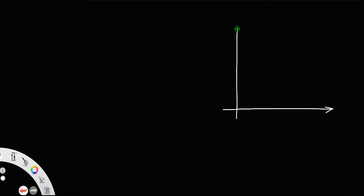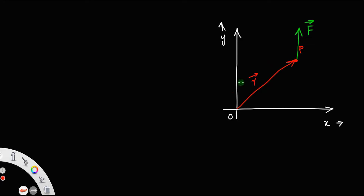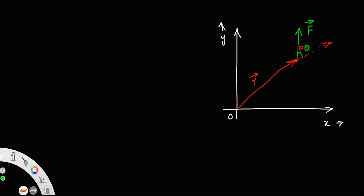Let us consider a point P, with the x-axis, y-axis, and origin. Let us consider a point P with the position vector r from the origin. Suppose this point is acted upon by a force F in this direction. This point P is influenced by a force F, and if you extend the line, this also is r and let this angle be theta. So the force is acting at an angle theta with the position vector.